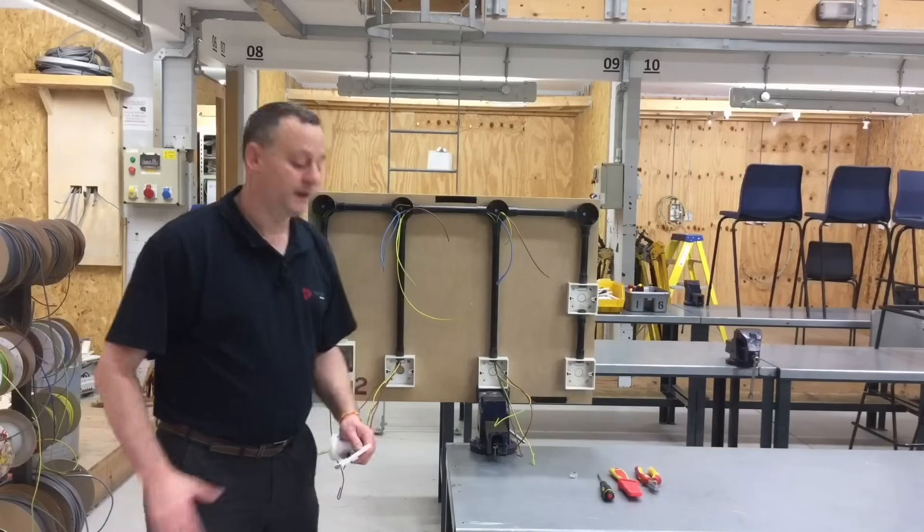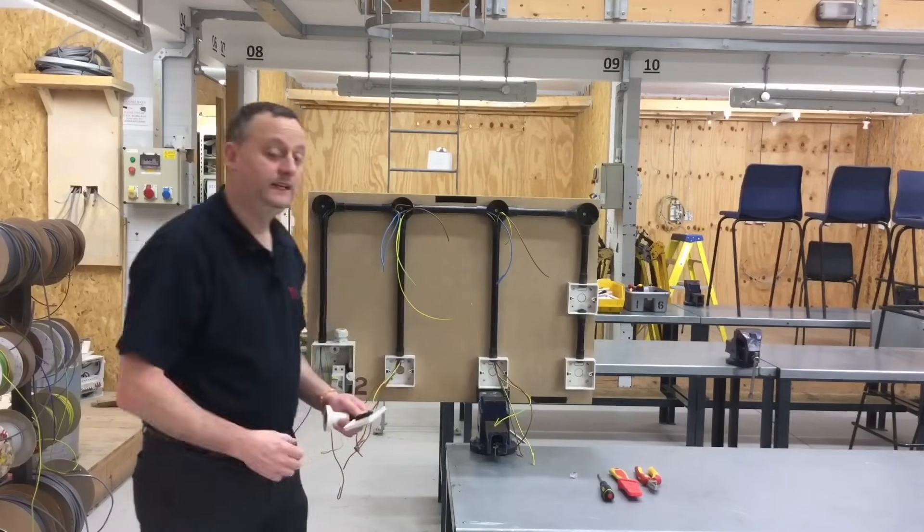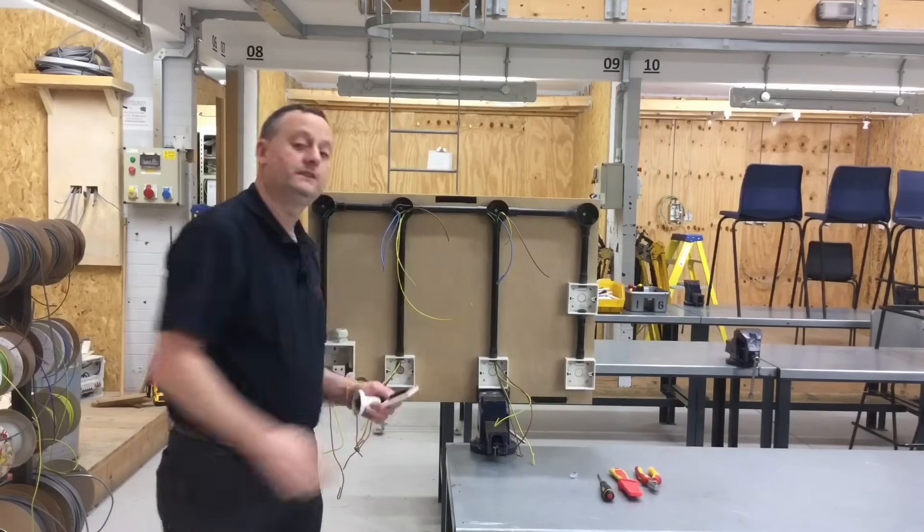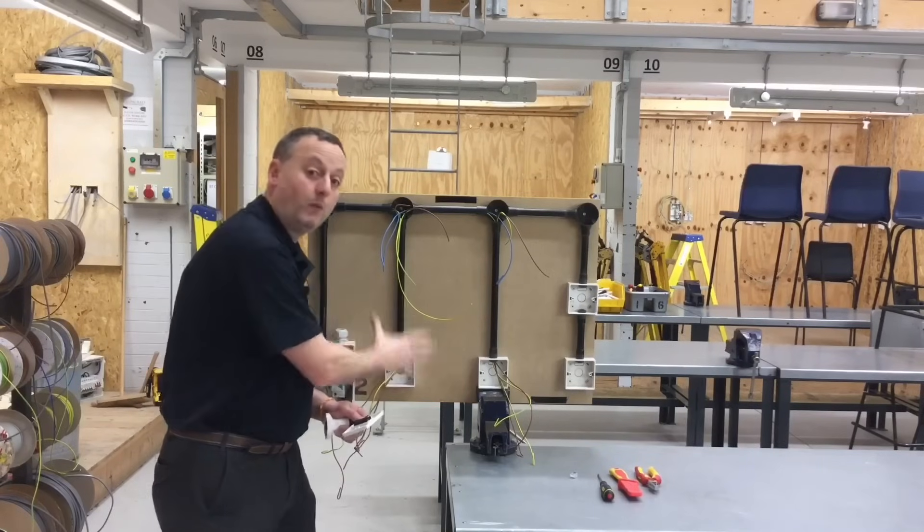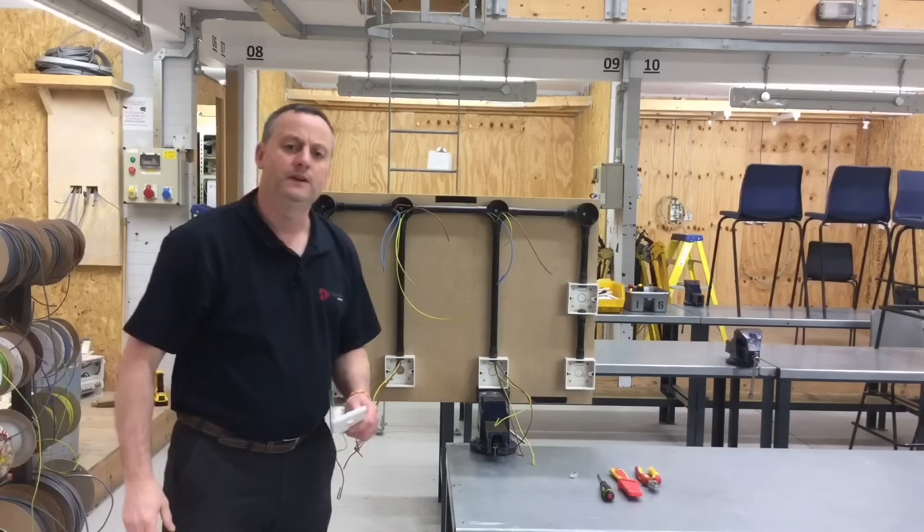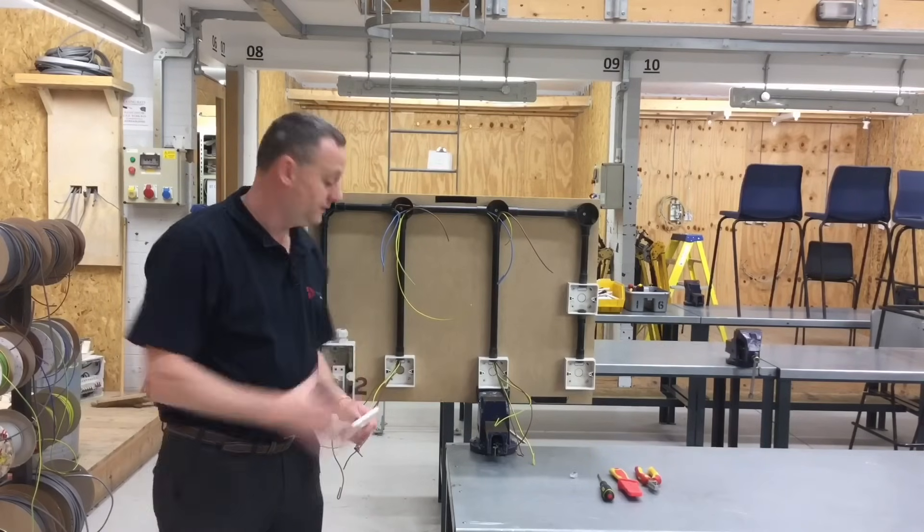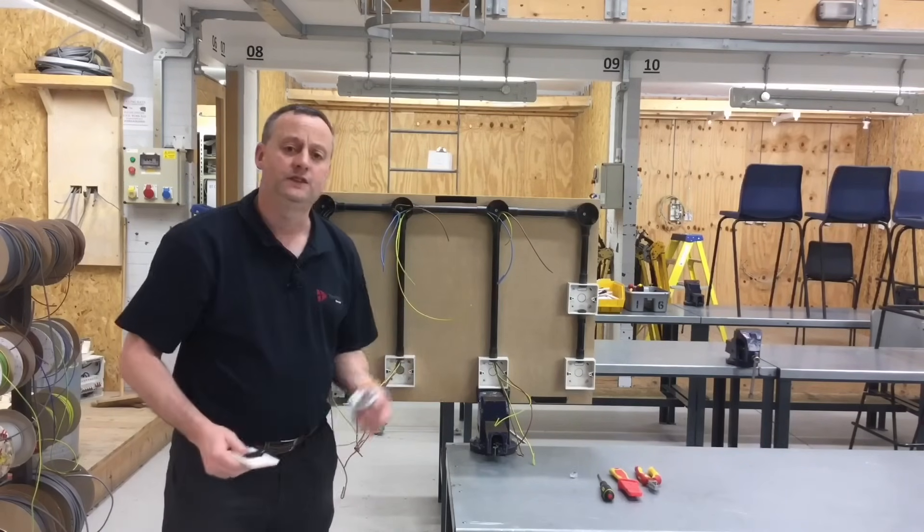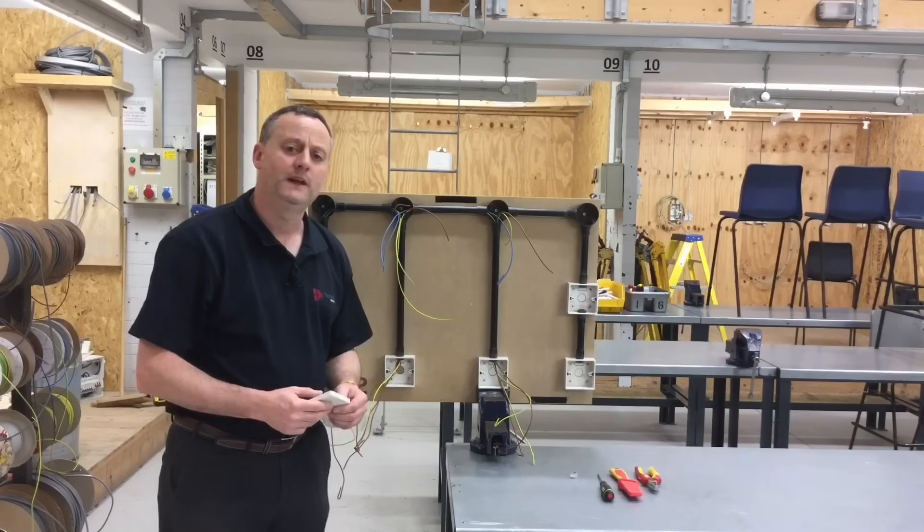In my previous presentation we wired a couple of one-way switches independently controlling two different lights - office number one, one-way switch and light, office number two, one-way switch and light. Now we're going to look at the terminations within the switch and the skirted batten lamp holder to make sure we get those connections absolutely correct.